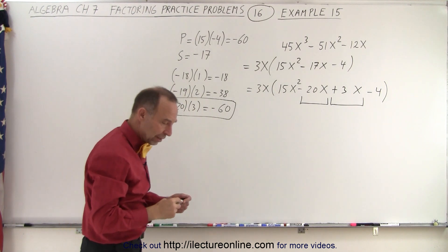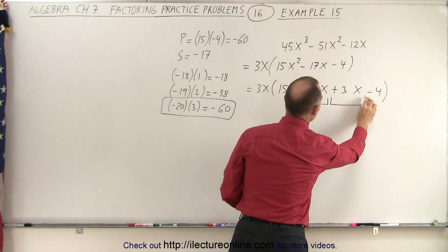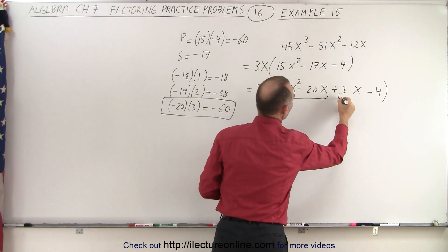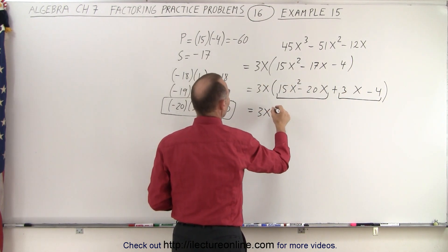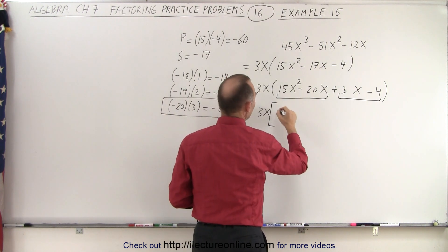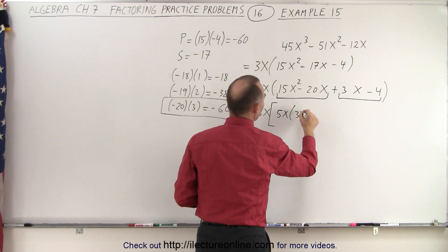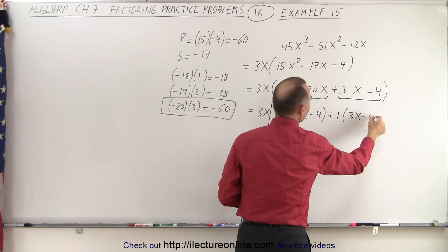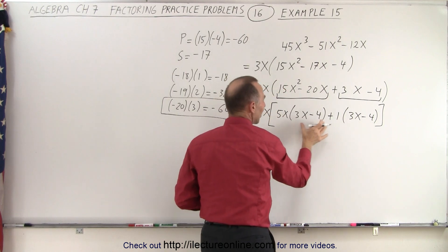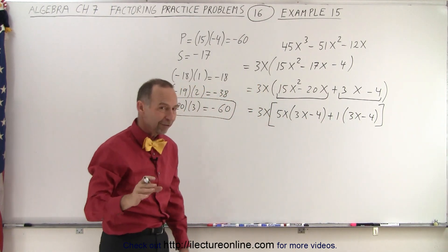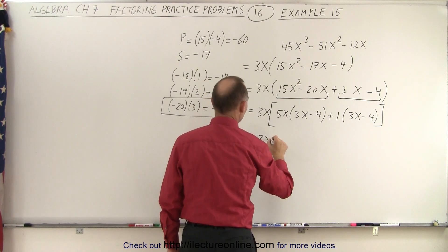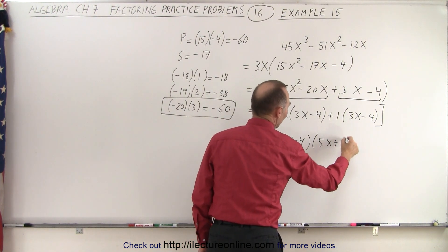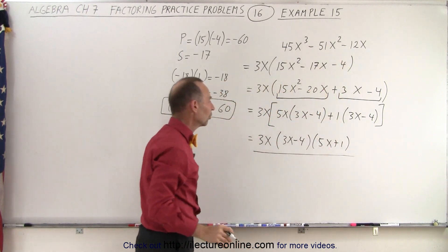Now I'm ready to go ahead and factor that. What we must do now is group them together two by two — group the first two together and the next two together. When I do that, I get 3x times: here I can factor out a 5x and I have left 3x minus 4, and here I can factor out just a plus 1 and I get 3x minus 4. I now have two terms that contain the exact same factor, 3x minus 4. So I can factor that out, and this becomes 3x times 3x minus 4 times 5x plus 1. This is the factored form of my original expression.